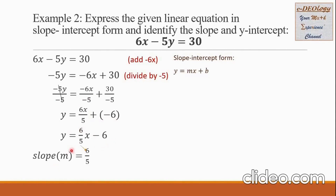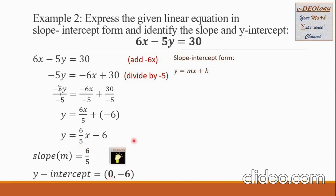For the slope, we will copy the coefficient of x, which is 6 over 5 — this is the slope. And for the y-intercept, we will take negative 6, put it as the y-coordinate, and the x-coordinate is always 0. This is our final answer.